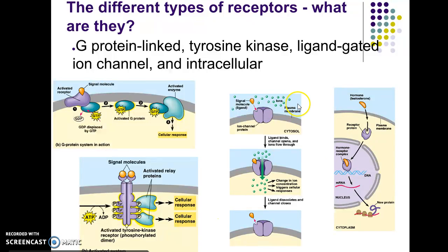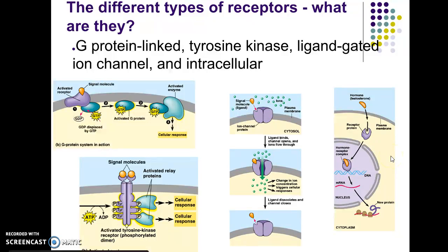Ion channels I won't really talk about, since you already know those from cell transport. For intracellular receptors, you'll usually find them within the cytoplasm or even in the nucleus. In this case, your signaling molecules must be hydrophobic or at least small enough to cross the membrane. For example, steroids like testosterone or estrogen would be signaling molecules received by an intracellular protein. We'll stop there and pick up in the next video.